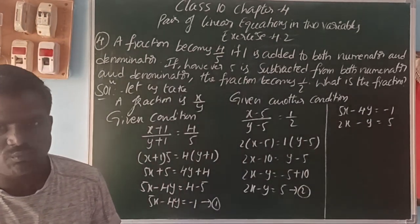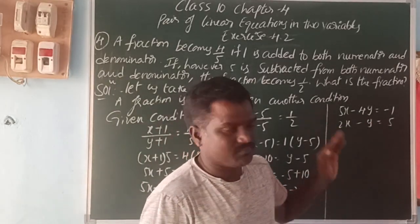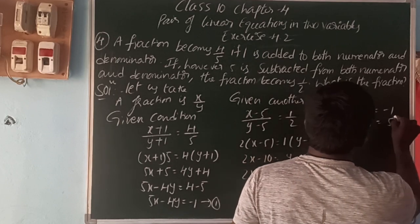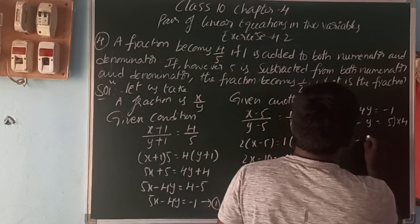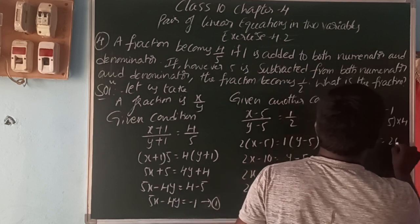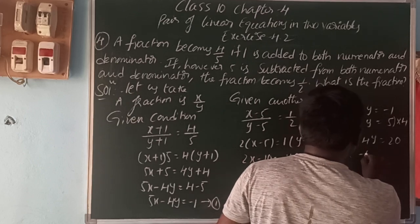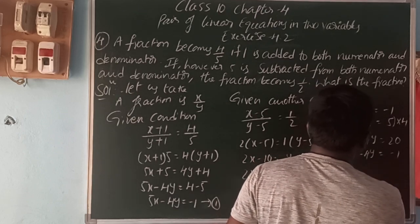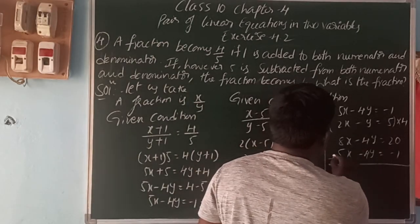So here, I want to eliminate y variable, then we can make the equal coefficient of the y terms. So, multiply the second equation by 4. So, that is here, 4 times 2 is 8x minus 4y, 4 times 5 is 20. So, here, 5x minus 4y is equal to minus 1. So, now, we can subtract the two equations because the same sign for the y terms are there.